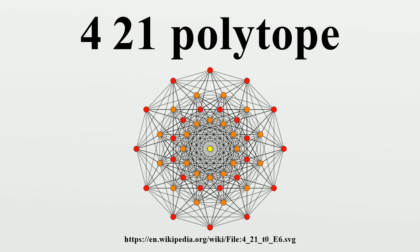The vertices of this polytope can be obtained by taking the 240 integral octonions of norm 1. Because the octonions are a non-associative normed division algebra, these 240 points have a multiplication operation making them not into a group but rather a loop — in fact a Moufang loop.